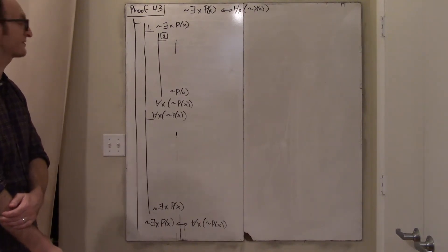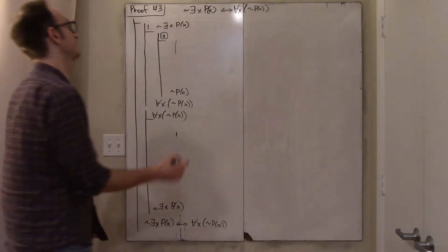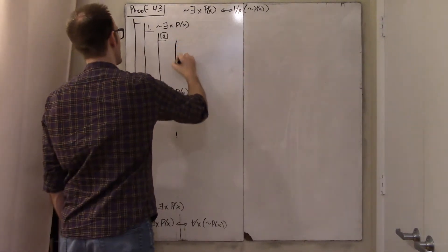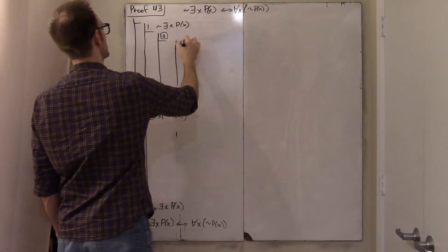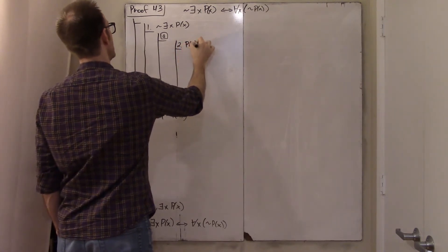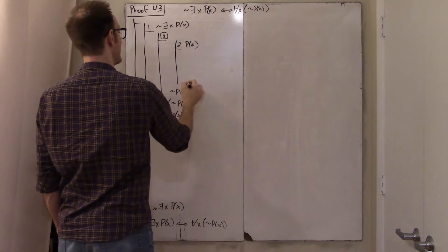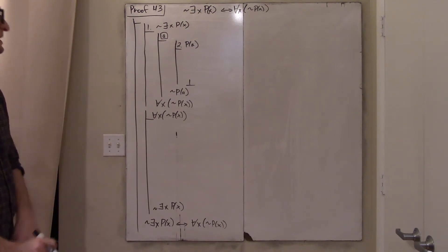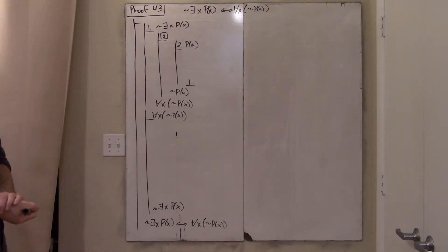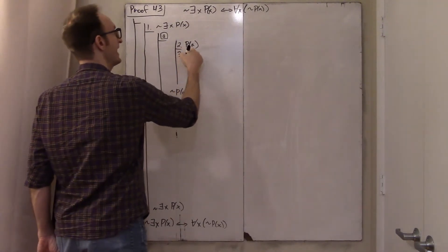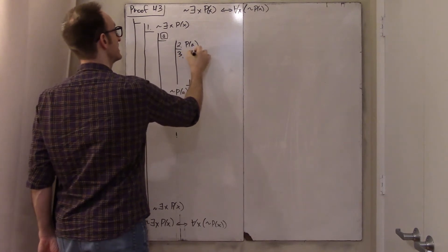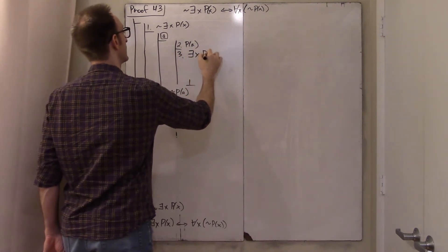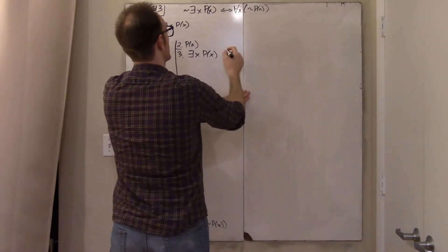The next step is also intuitive. To show that a doesn't have property P, assume that a does have property P and arrive at a contradiction. It's clear why lines one and two lead to a contradiction: if a has property P, then there exists someone with property P.